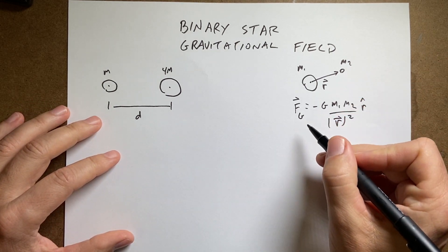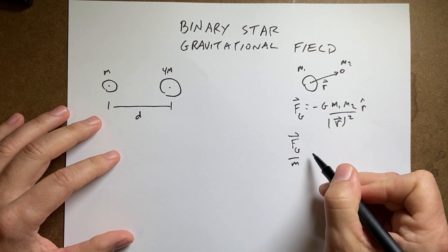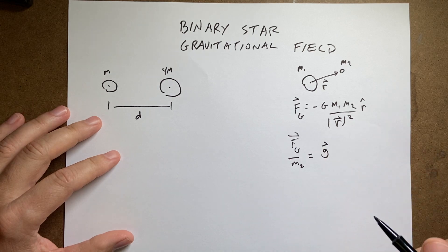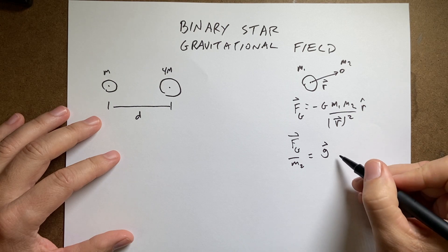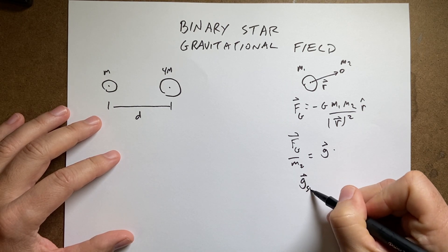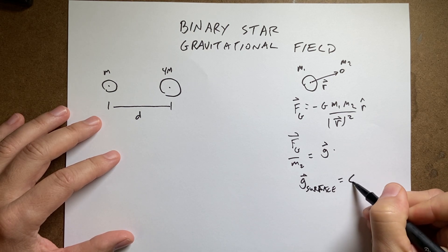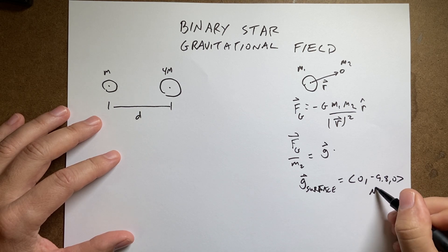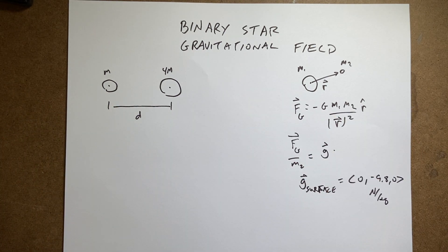Now, if I take this gravitational force and I divide by m2, I get the gravitational field g. And this is the force per unit mass. And yes, on the surface of the earth, g surface is negative 9.80 newtons per kilogram. That's the gravitational field on the surface of the earth, but we can calculate that anywhere.